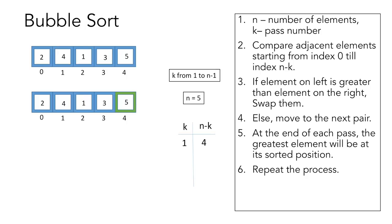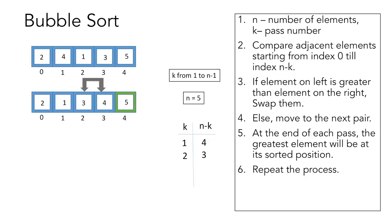We move on to the next pass, k equal to 2, and n-k would be 3, so we will make 3 comparisons from index 0 to index 3. As 2 is smaller than 4, there is no swapping. Moving to the next pair, 4 is greater than 1 so we swap them. Then again 4 is greater than 3 so we perform swapping again. This is the end of our second pass, at the end of which element 4 is at its sorted position.